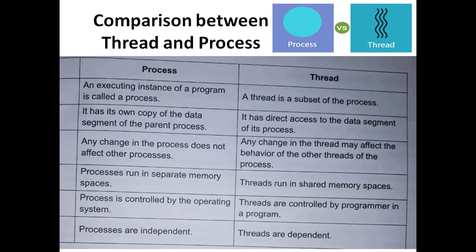Processes run in separate memory spaces, while threads run in shared memory spaces — the threads within a process share the same memory space. Processes are independent, while threads are dependent on the process.